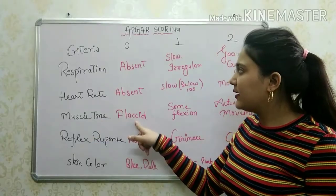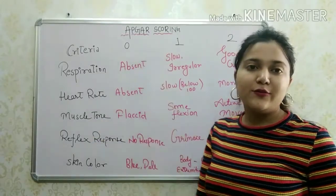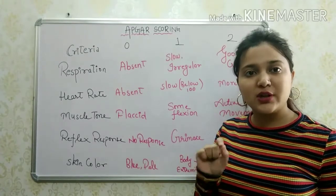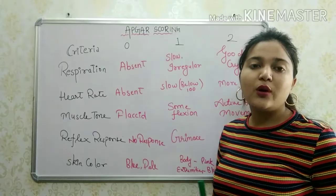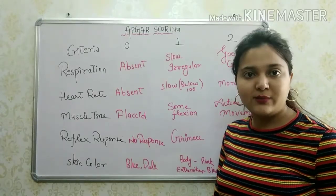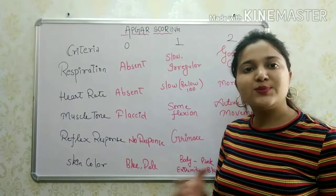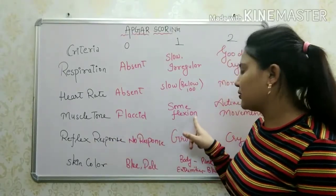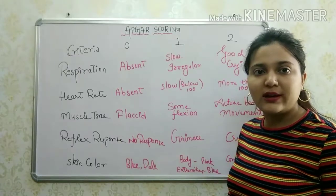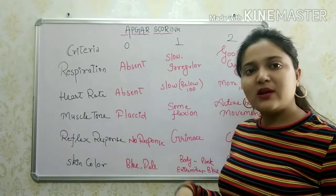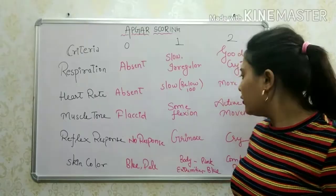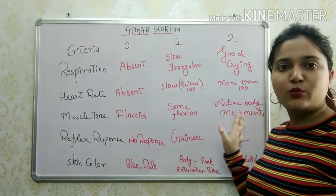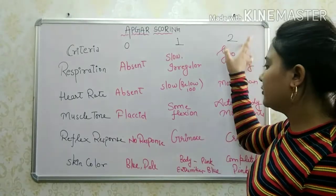The next criterion is muscle tone. If the muscle tone is flaccid — meaning when we pinch the baby's muscles, the baby gives no response — we score 0. If there is some flexion, meaning some movement visible in the upper and lower extremities, we score 1. If there are active body movements, we score 2.